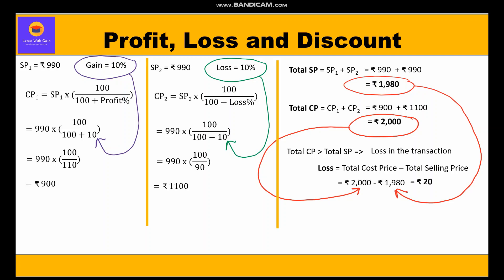Loss percentage is calculated on the total cost price: loss / total cost price × 100. Substituting: 20 / 2000 × 100 = 1 percent. So the total loss percent is equal to 1 percent.